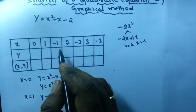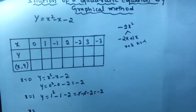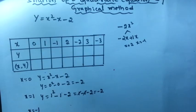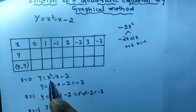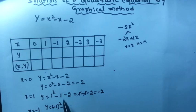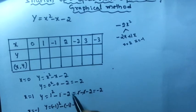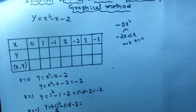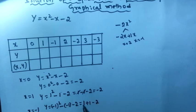Similarly, find the value for x = minus 1. y = (-1)² - (-1) - 2. Minus 1 squared is plus 1, and minus into minus gives plus 1. So plus 1 plus 1 is plus 2, and plus 2 minus 2 is 0.